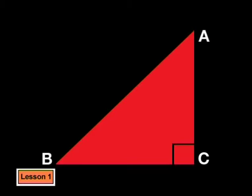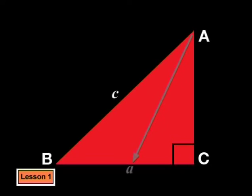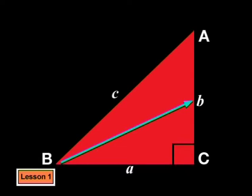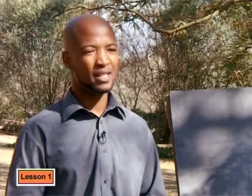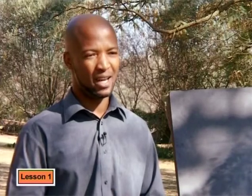By convention, we can label the sides like this. The side opposite angle C we label c. The side opposite angle A we call a. And the side opposite angle B we call b. Now can any of you remember what the trig functions are? I remember the words sine, cos and tan, but I'm not sure what to do with them.